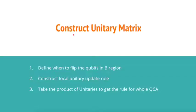After we prepare the initial state, we are going to construct the unitary matrix, which we will use to apply as a rule for the whole quantum cellular automata. We first define when to flip the qubits in the B region that we mentioned in the initial state part. At initial state, all the qubits in B region are in zero states. For the qubits that we want to flip, we use a Pauli X gate to flip it to 1. For the ones that we do not want to flip, we use an identity matrix to keep it as it is. This is a local update rule for each of the qubits.